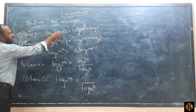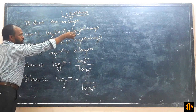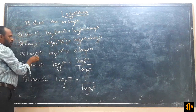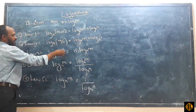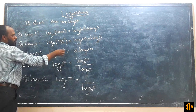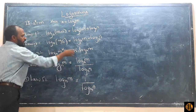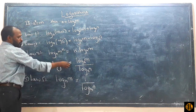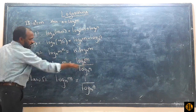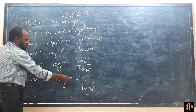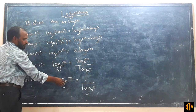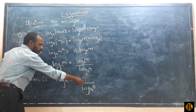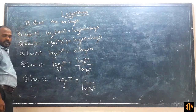Summary of laws: Law 1 — multiplication, use plus; Law 2 — division, use minus; Law 3 — m to the power of k; Law 4 — log m by log n; Law 5 — log m base n equals 1 by log n base m.